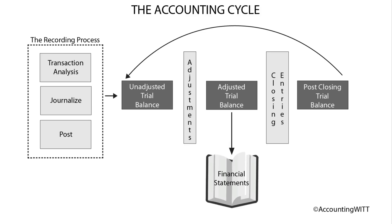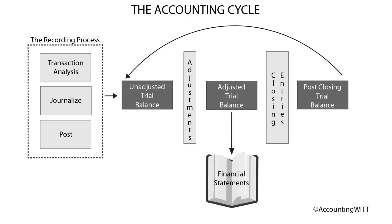The unadjusted trial balance is the summary of all that organized information that was recorded in the books at the end of a given period. The unadjusted trial balance needs to be edited to account for any missing items, to remove items that need to be recognized in another period, or to correct any estimates or errors.